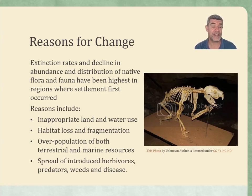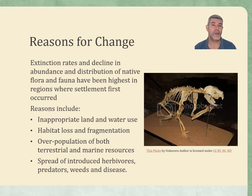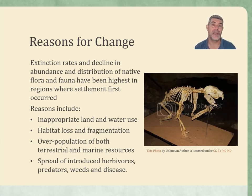So we've had mass extinction events, minor extinction events, and currently we have a number of species that are in danger or have become extinct in the past one to two hundred years. Why do we have declines or changes in the abundance and distribution of native flora and fauna? And why are they so high when we see human settlement? Whenever humans settle in particular areas, they do seem to have an impact on the native species.